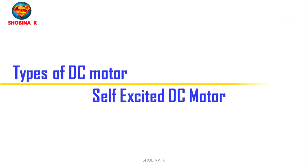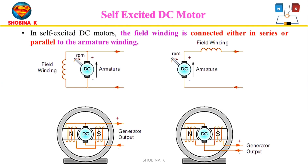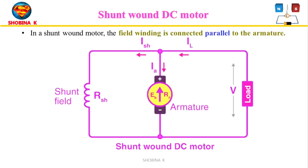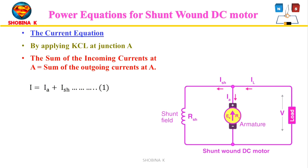In self-excited DC motors, the field winding is connected either in series or parallel to the armature winding. Self-excited DC motors can be further classified into shunt wound DC motor, series wound DC motor, and compound wound DC motor. In a shunt wound DC motor, the field winding is parallel to the armature; this parallel circuit is also known as the shunt circuit, hence the term shunt motor.